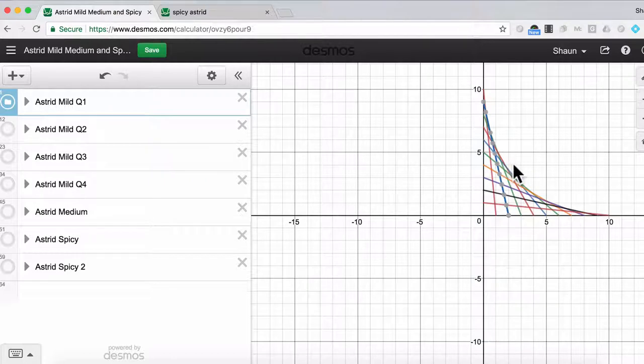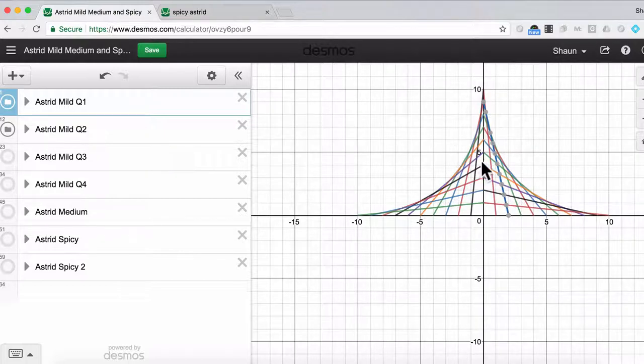For example, if you want to look at the second quadrant right here, many students realize that instead of negative slopes, like in the first quadrant, I have positive slopes. And then if I go to the third quadrant...